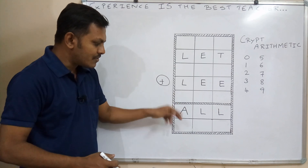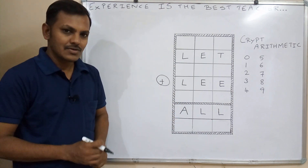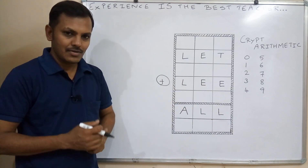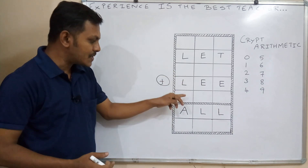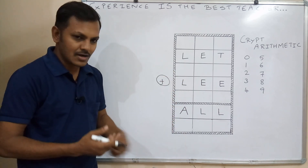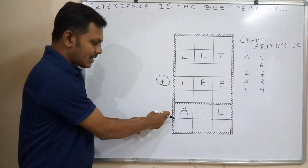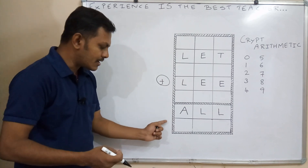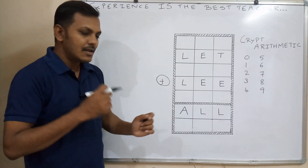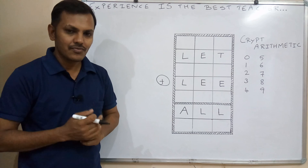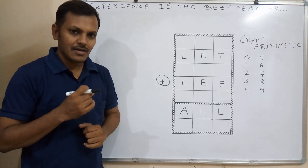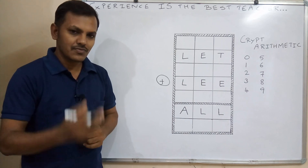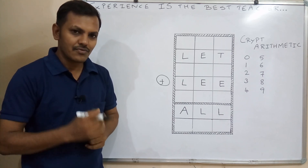When you add a number to itself, you must get a single digit result. For example, we cannot write L equal to 5, because 5 plus 5 equals 10 — that is a 2-digit number. If there were another column, we could carry over 1, but here the carry over is already 1. So L can have a maximum value of 4. That means L can only be assigned values from 0 to 4.